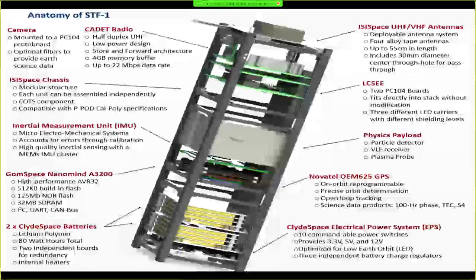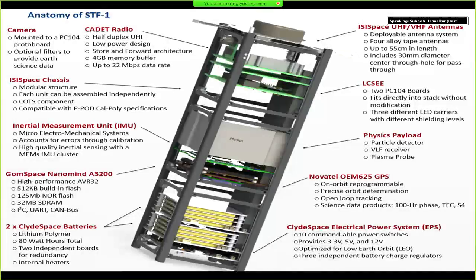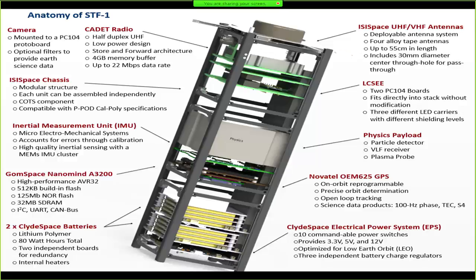Just walking through the hardware quickly — at the top we will have a CADET radio. Our chassis is from ISIS Space. We have an IMU experiment as part of our science. Our flight computer is the GomSpace NanoMind A3200 — this is a newer version of what Dellingr is flying from GomSpace. It's an AVR microprocessor, whereas Dellingr's is an ARM.